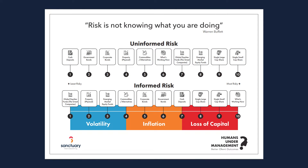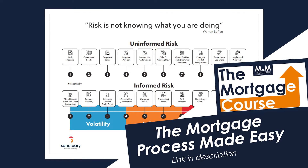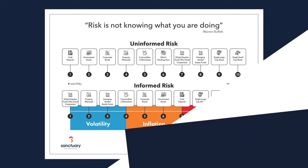So Warren Buffett says, risk is not knowing what you're doing, which is very true. So I like to split risk up into what I call uninformed and informed risk. What you see on screen now is something that a good friend of ours in the profession, Andy Hart of Maven Advisor and Humans Under Management, has come up with. It's a great model for explaining to clients what risk really is. So it's split into uninformed and informed risk.